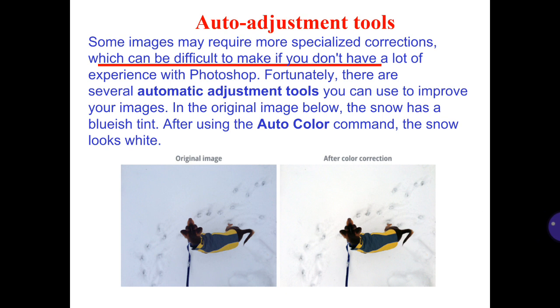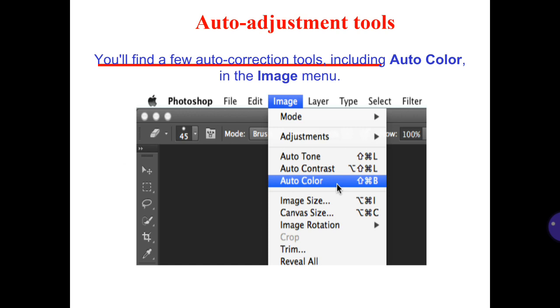Auto-adjustment tools: Some images may require more specialized corrections, which can be difficult to make if you don't have a lot of experience with Photoshop. Fortunately, there are several automatic adjustment tools you can use to improve your images. In the original image below, the snow has a blue color cast. After using the auto-color correction, the snow looks white. You'll find a few auto-correction tools including auto-color in the Image menu.